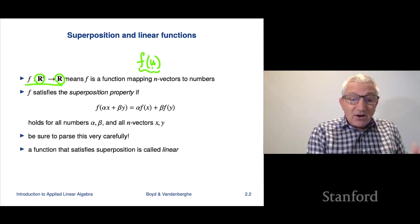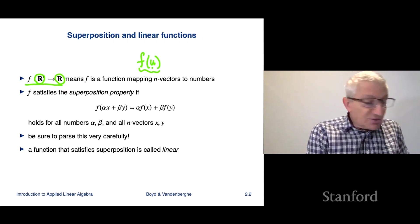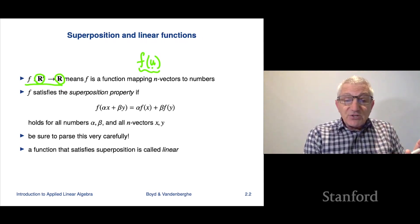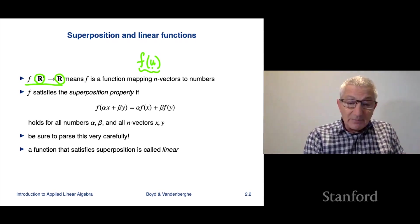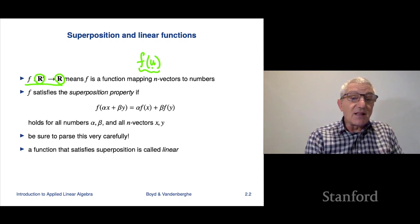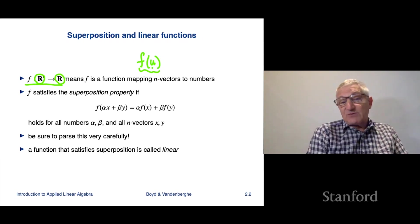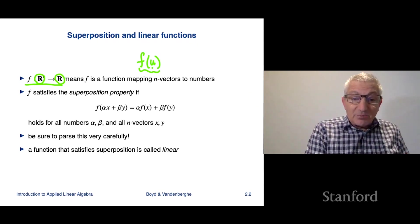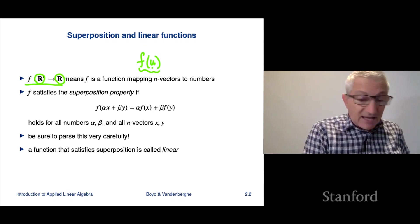Now, a function from R^n to R satisfies what's called the superposition property if the following holds. And these equations are things you have to look at very carefully, very quietly, make sure you understand everything in them, because there's a lot of overloading going on.